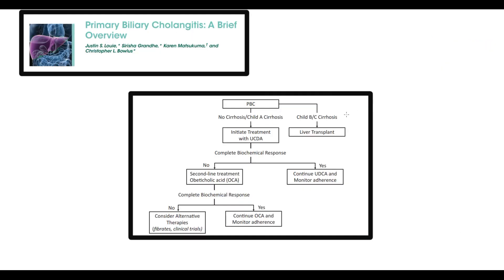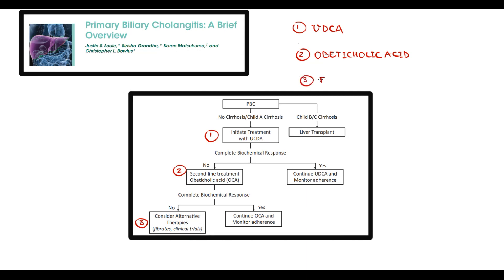According to current guidelines, there are two initial treatment options. If there is no severe cirrhosis, we can try drugs — the major medication in treatment of primary biliary cholangitis is ursodeoxycholic acid. If ursodeoxycholic acid does not help, the next step is obeticholic acid, and as a last option we can try fibrates. If cirrhosis has already developed, the only option left is liver transplantation.